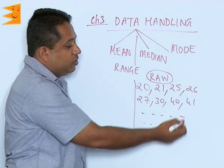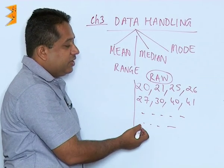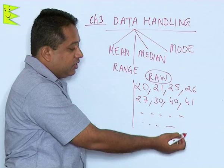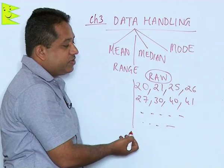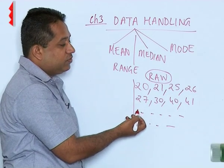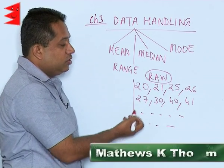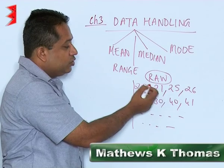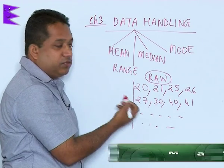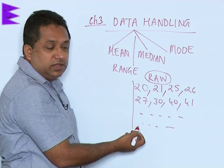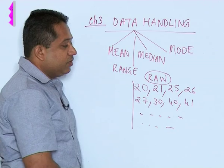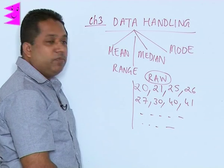The information here is not of much significance except for the fact that you have about 40 observations. These are showing the marks of 40 students. This is a raw data. When I am going to do some arrangement in this, the information will become a little more meaningful.